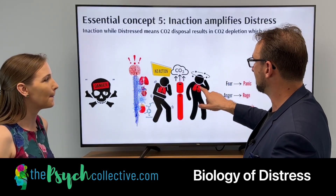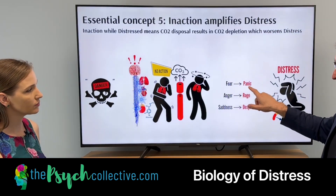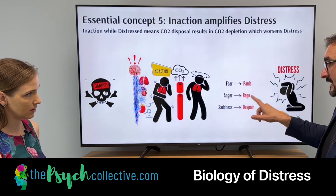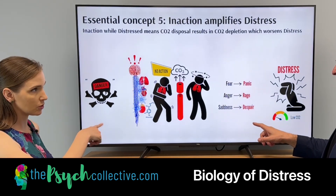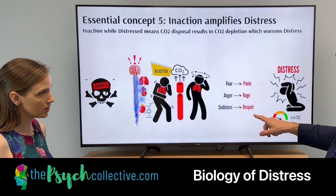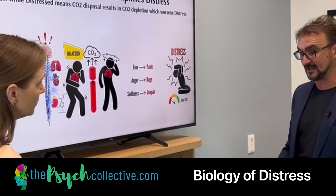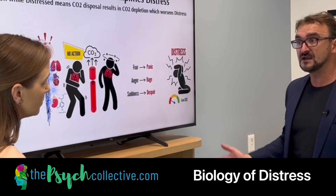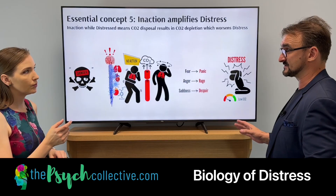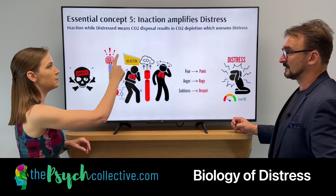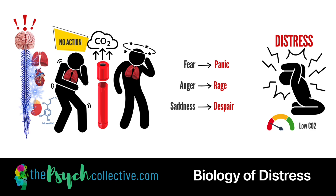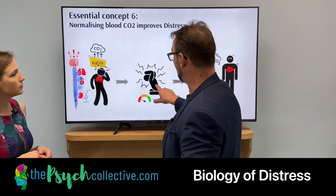Whatever they're doing — panting, gasping — they're blowing off tons of carbon dioxide and ending up in that depleted state. So if you're fearful to begin with, now you're panicked. If you're angered to begin with, now you're in a rage. If you're sad, you're despairing. This is the distress cycle. We've got low CO2, we can't think straight — and that can go on for 10, 20, 30 minutes. It's super unpleasant, because there's a lack of action. Our fight-or-flight has been activated but we're not acting.